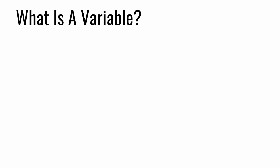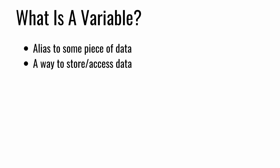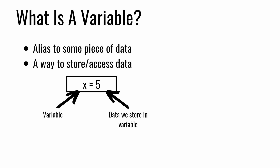So what is a variable? A variable is basically an alias to some piece of data. They allow us to easily store and access data. If you're familiar with algebra, you know that you can have letters that equal numbers, like x equals 5 for instance, and we would call x a variable.